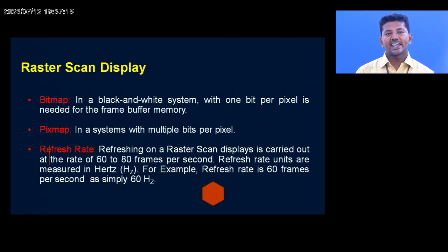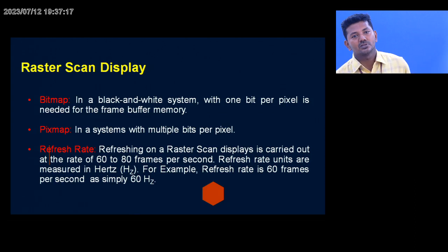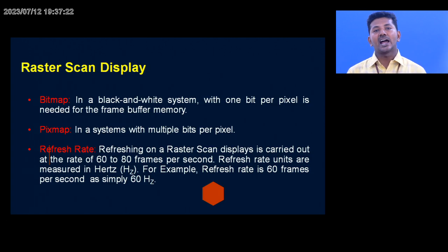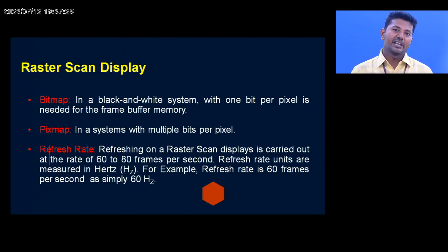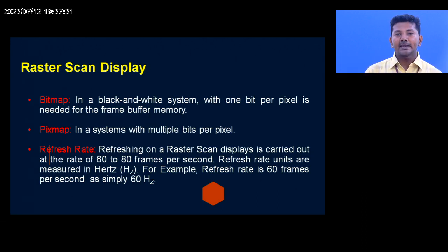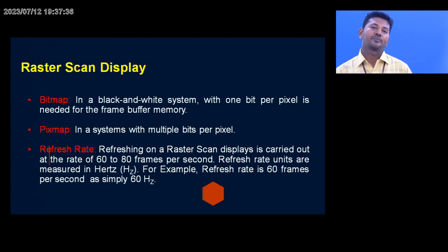The next component is a bitmap image — bitmap as well as pixmap. Bitmap is used for black and white systems and pixmap is used for color monitors. In bitmap, we represent one pixel per bit. If it is a black and white screen, black represents zero and white represents one.